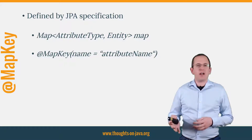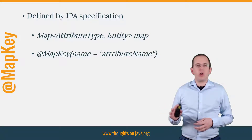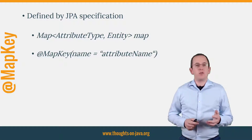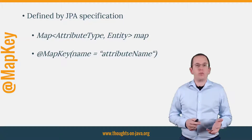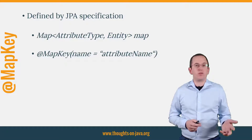It is supported by Hibernate and all other JPA implementations. You can define this mapping in almost the same way as the mapping to a java.util.List. You just need to use a Map as the attribute type and annotate it with the @MapKey annotation, which references the attribute you want to use as the key of your map.